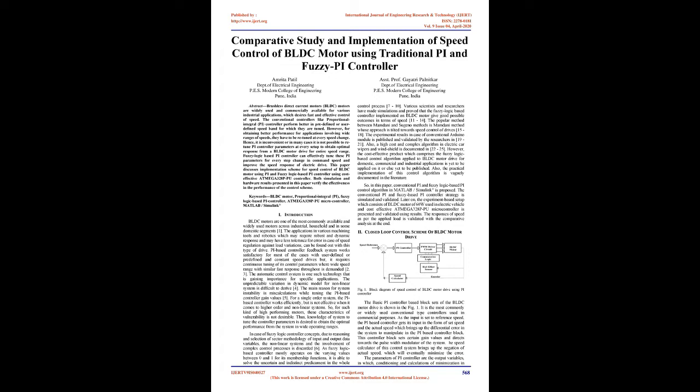These applications desire fast and effective control of speed. Conventional controllers like Proportional Integral (PI) controller perform better in predefined or user-defined speed bands for which they are tuned. However, for obtaining better performance for applications involving wide ranges of speeds, they have to be retuned at every speed change. Hence, it is inconvenient, or in many cases not possible, to retune PI controller parameters at every setup to obtain optimal response from a BLDC motor drive for the entire speed range.